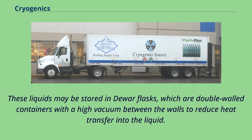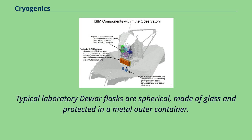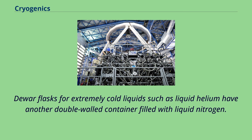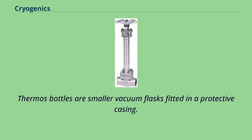These liquids may be stored in Dewar flasks, which are double-walled containers with a high vacuum between the walls to reduce heat transfer into the liquid. Typical laboratory Dewar flasks are spherical, made of glass, and protected in a metal outer container. Dewar flasks for extremely cold liquids such as liquid helium have another double-walled container filled with liquid nitrogen. Dewar flasks are named after their inventor James Dewar, the man who first liquefied hydrogen. Thermos bottles are smaller vacuum flasks fitted in a protective casing.